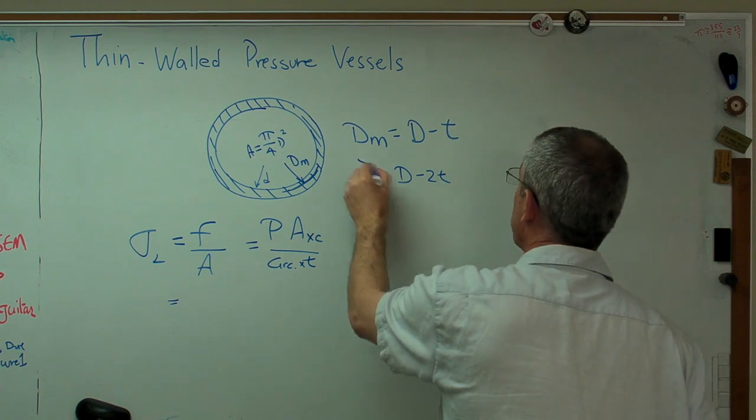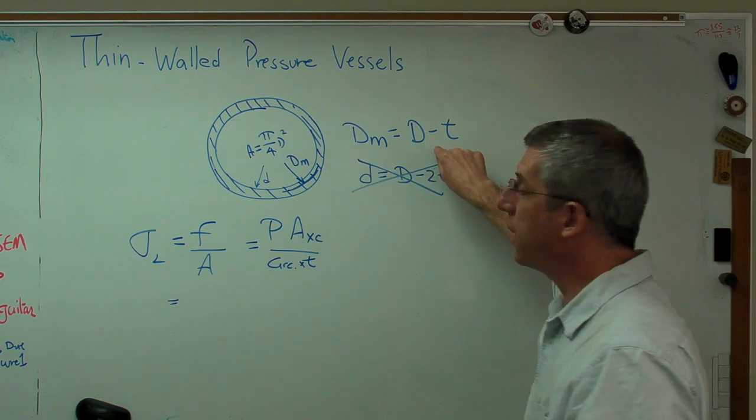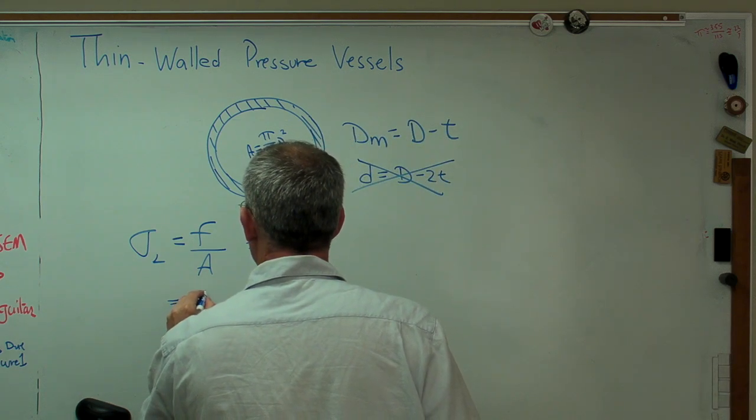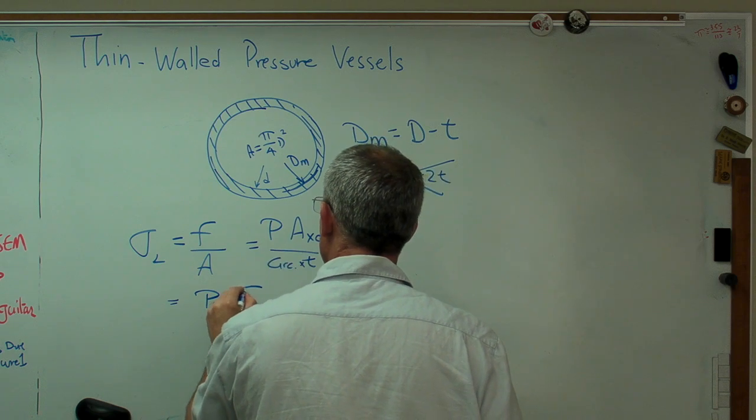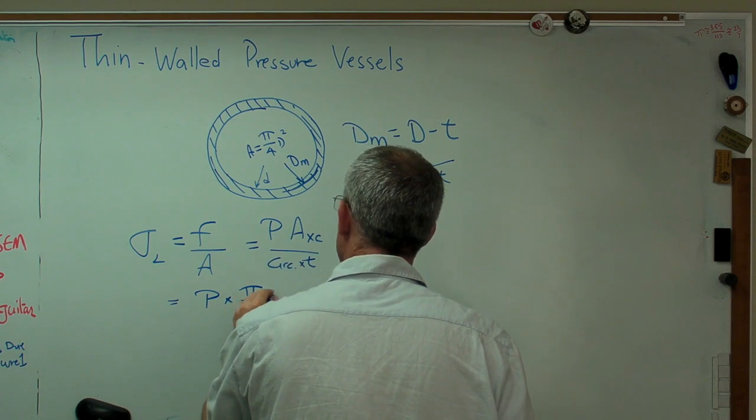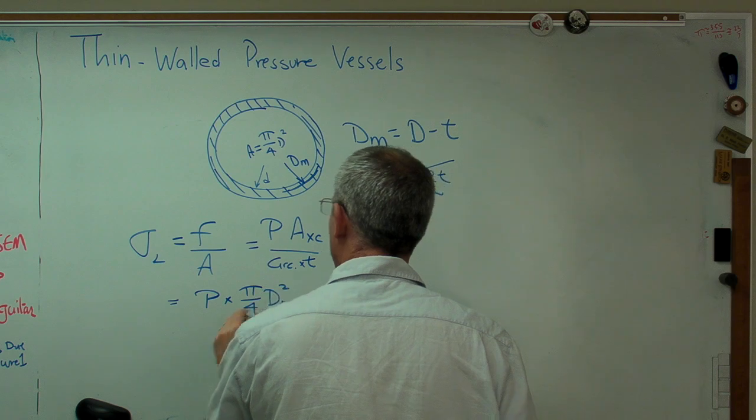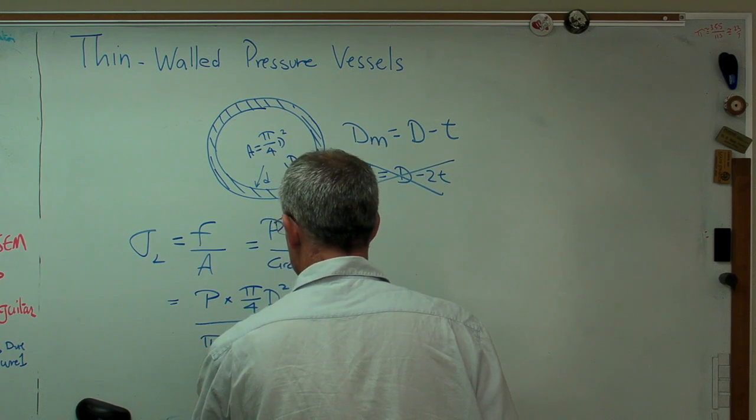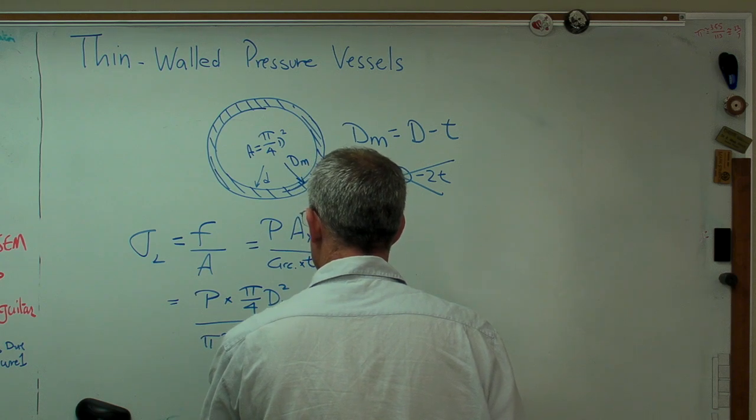Okay, but that's not what we're doing here, so don't make that mistake. We're using that diameter. So, here we have P times that area now is going to be pi over 4 times the mean diameter squared. Circumference is pi times the mean diameter times the thickness.